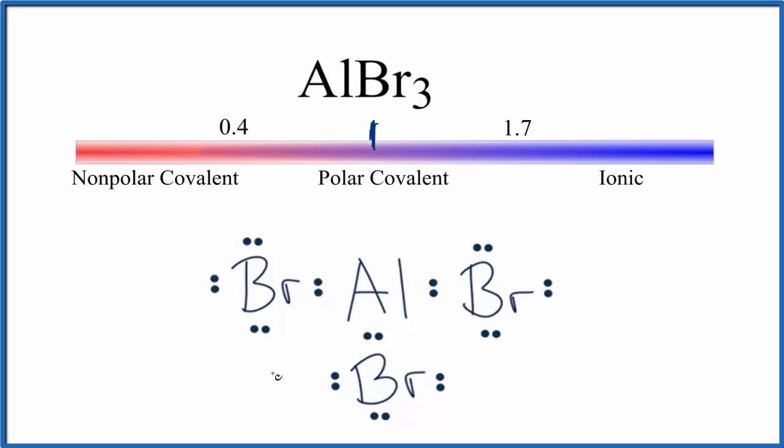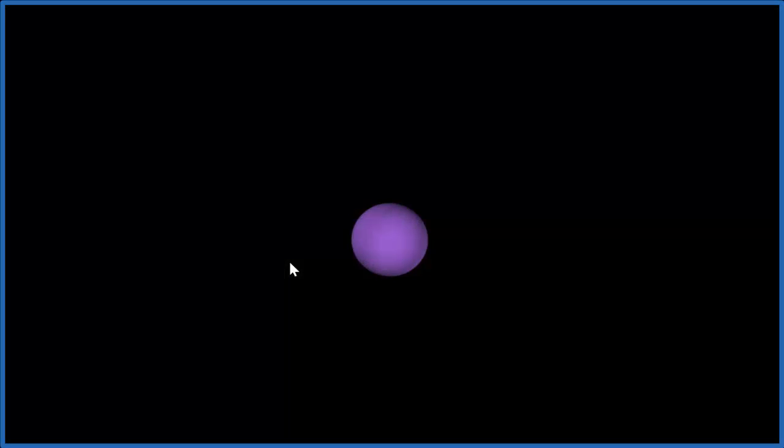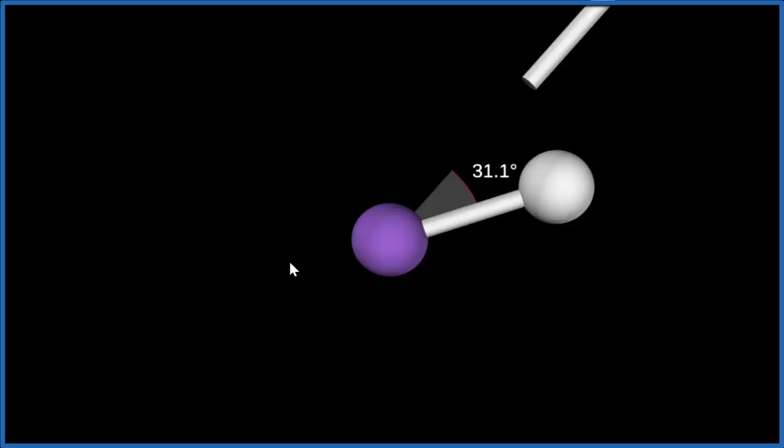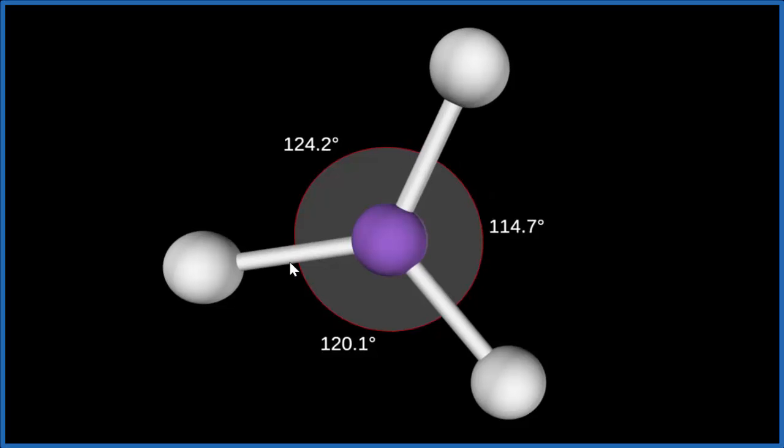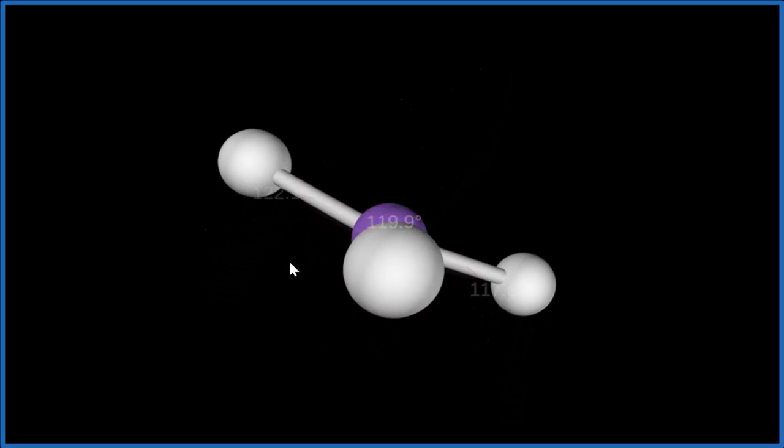Let's look at the whole molecule in three dimensions. The aluminum, that's the purple in the center, has one, two, three bromine atoms. They spread out to be as far away from each other as they can. This is called trigonal planar because it's all in a plane.